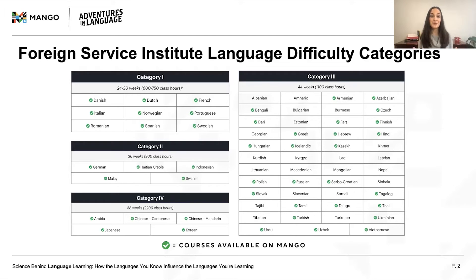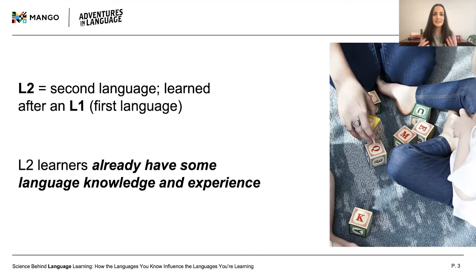It probably makes intuitive sense that if the language you're learning is similar to your L1 — if it has a lot of similar vocabulary and grammatical features, or a lot of overlapping sounds — you'd have an easier time learning that language than if it's very different from your L1. To a certain extent, this is true. But some of the ways that languages influence each other might not be what you'd expect. By definition, if you're learning a second language, you've already got at least one language under your belt, so what you already know would come into play when you start learning a new one.